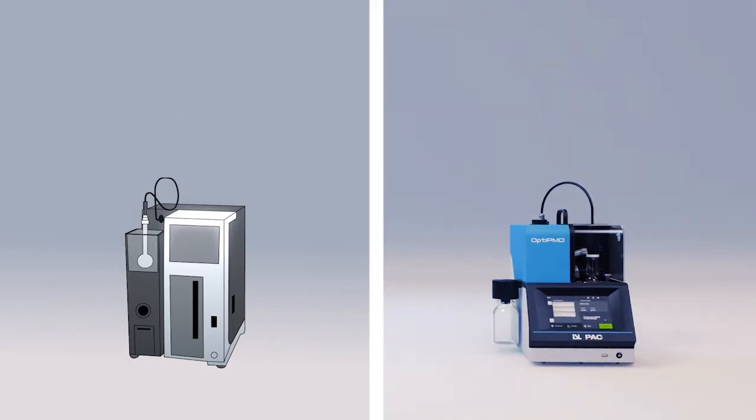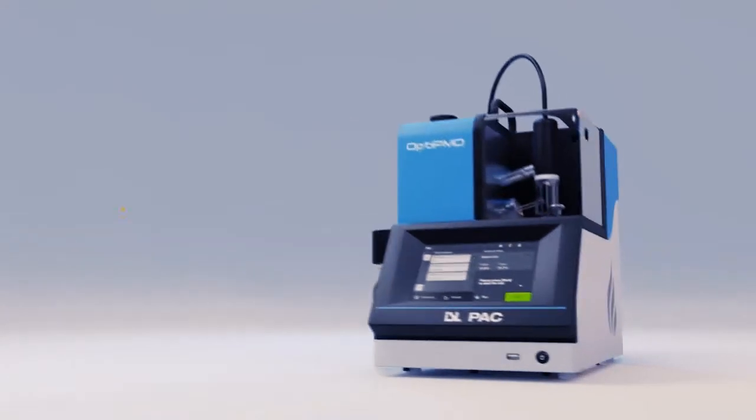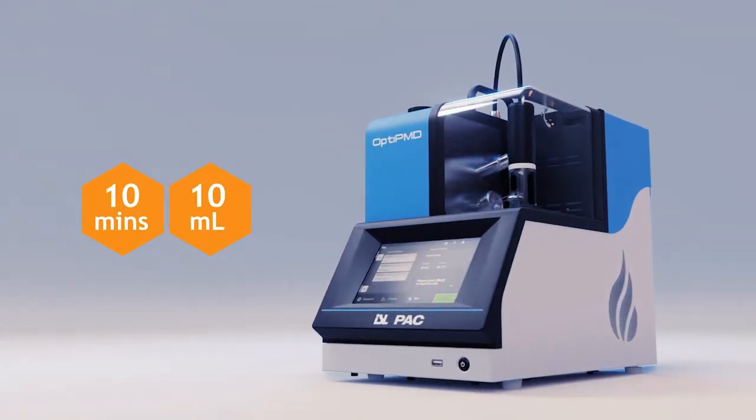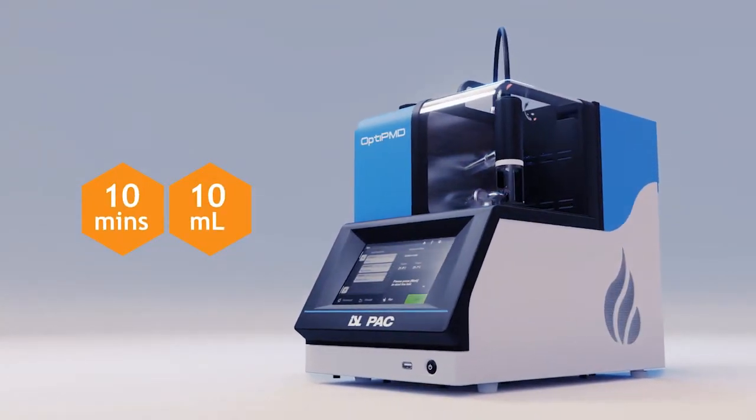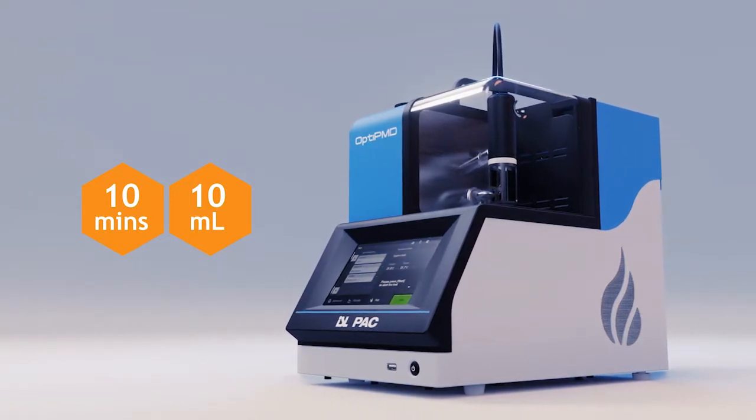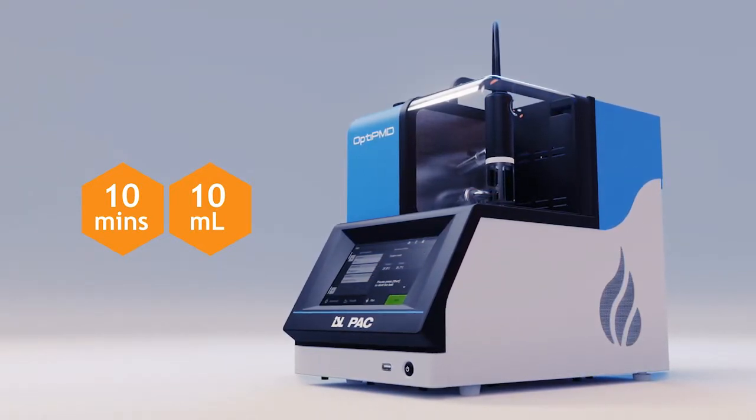OptiPMD performs a physical atmospheric distillation in just 10 minutes, using only 10 milliliters of sample. This allows you to make faster decisions for process optimization and potentially save you millions in off-spec products.